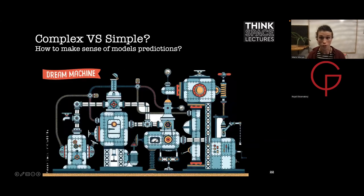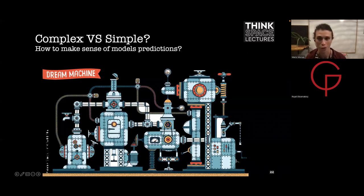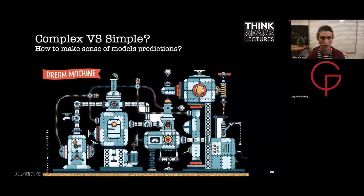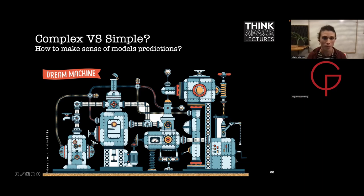In physics, we care not only about results but also about how we produce them. It's important to justify why a certain result is claimed or produced by a certain model. We would like our models to be explainable and ideally to produce uncertainties and errors associated with their predictions. It's really important to keep these considerations in mind when using artificial intelligence for physics and astronomy.